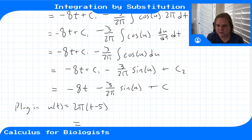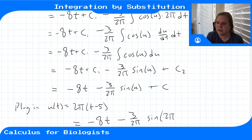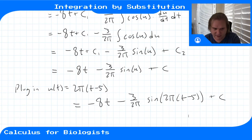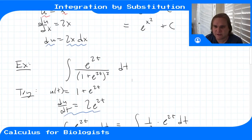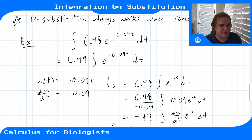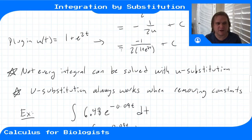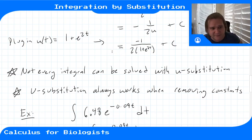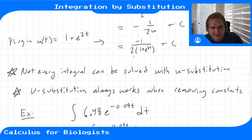We have minus 8t minus 3 over 2π times sine of u plus C, and now we plug back in u equals 2πt minus 5. The final answer is minus 8t minus 3 over 2π times sine of (2πt minus 5) plus C. U-substitution is nice when it works, but it can be tricky to find the right substitution. Not every integral can be solved this way — sometimes you need other techniques, or they simply can't be solved by hand at all.